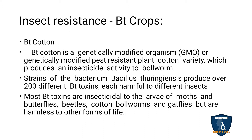Insect resistance — the plant has to resist the insect pest. That resistance has to be created through the biotechnological process, and for that the crops are called BT crops. BT indicates biotechnological crops or Bacillus thuringiensis crops. In that, we are going to see the first crop, which is BT cotton.